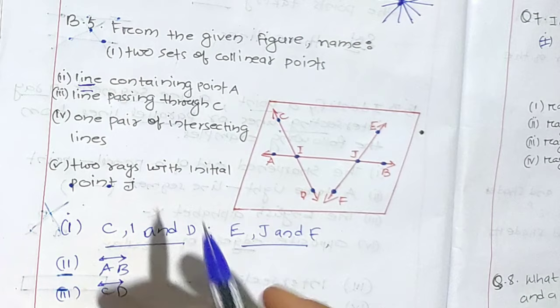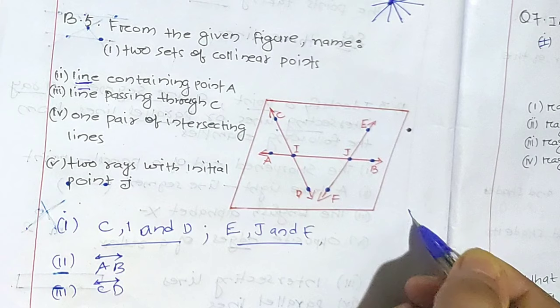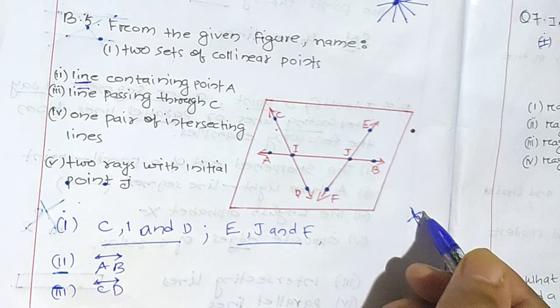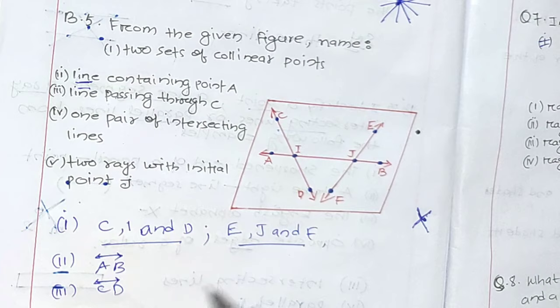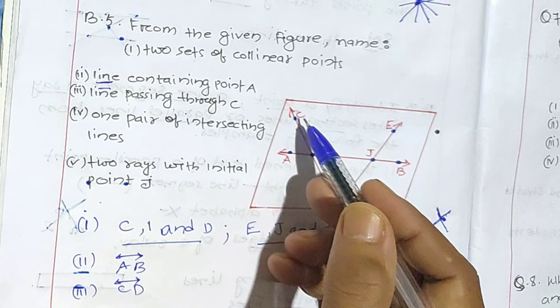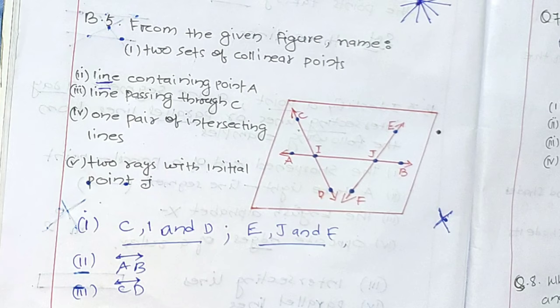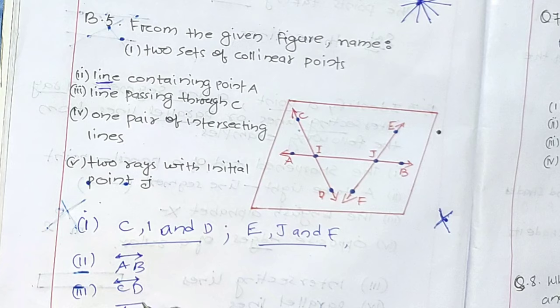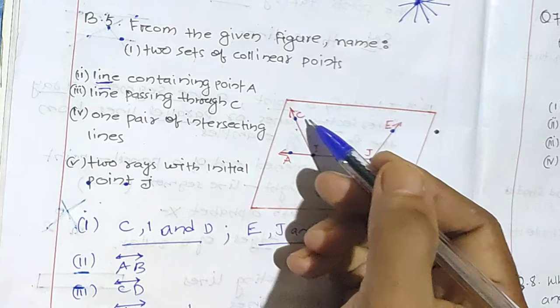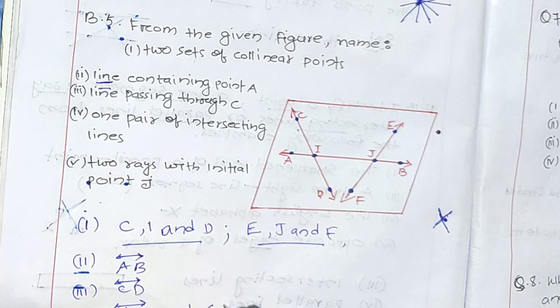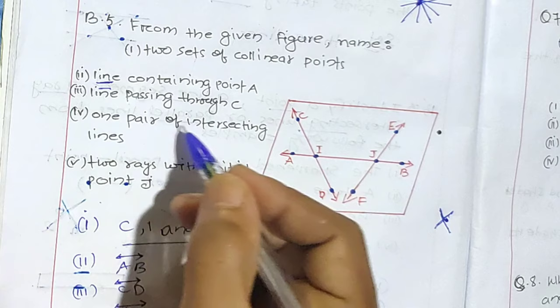One pair of intersecting lines. As we know, intersecting lines will be like this — crossing. They will have two lines passing through the common point. One pair of intersecting lines will be line AB. This line will intersect this line or this line — any of these. We can write AB and CD, or also EF, but let us write CD as it is closer in the alphabets. So line AB and line CD.